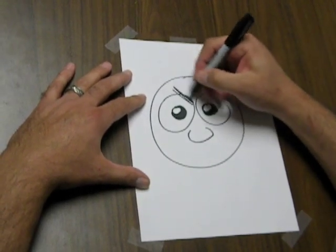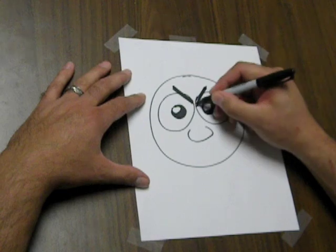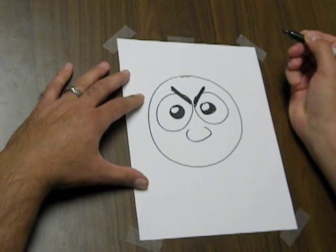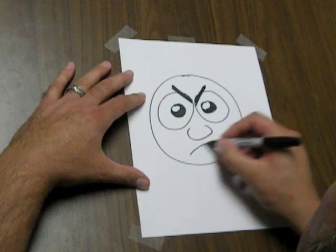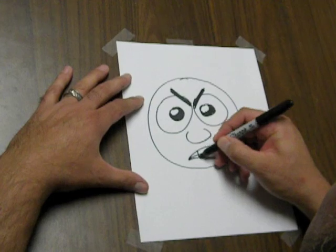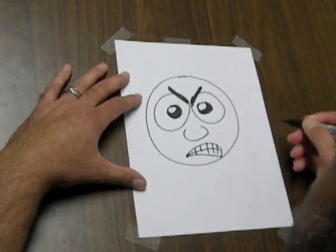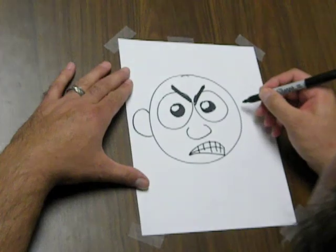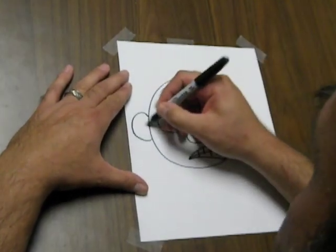Let me show you anger. If we just add a V-shaped eyebrow, and then a mouth that is not happy, this is automatically anger, male or female.